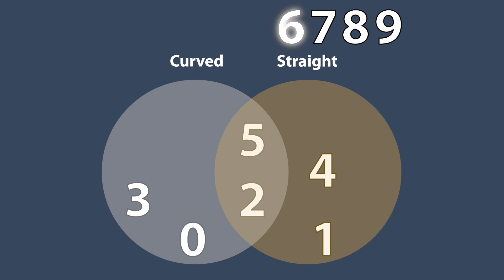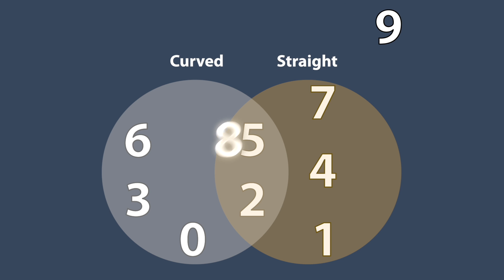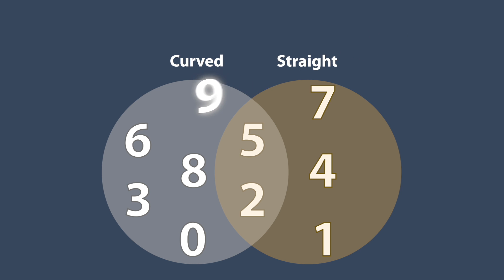6 is made of a curved line, so it goes in the left circle. 7 is drawn with two straight lines, so it goes in the right circle. 8 only has curved lines, so it goes in the left circle. 9 has no straight lines, so it goes in the left circle. Now we've organized the numbers with curved numbers, straight numbers, and numbers that are made with both curved lines and straight lines.